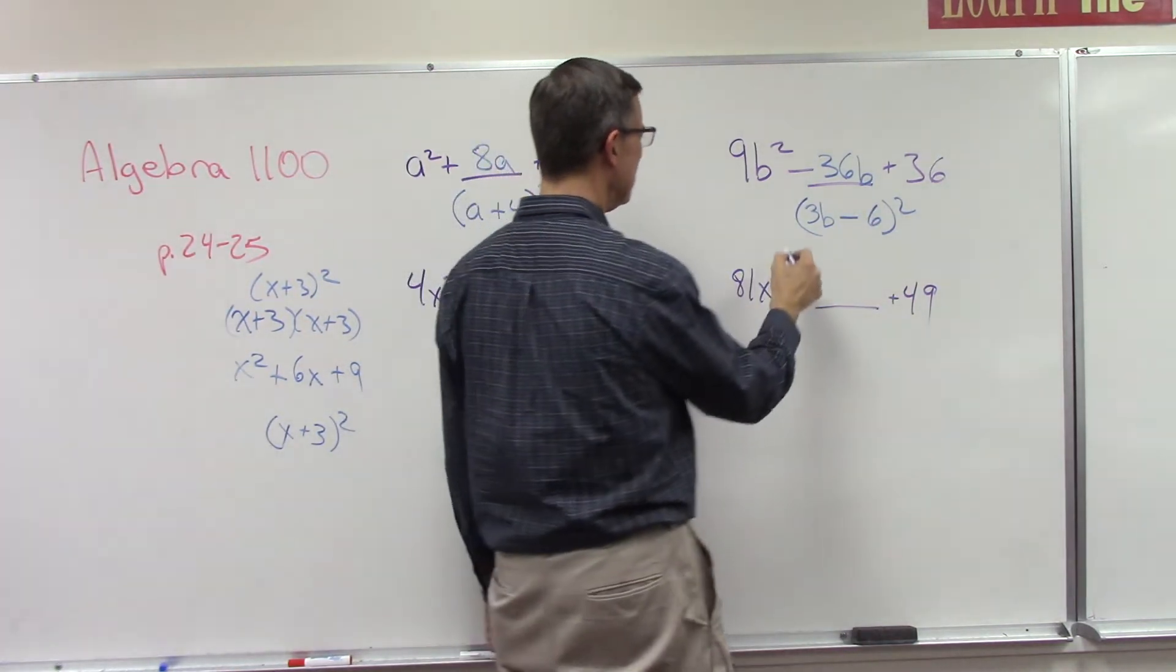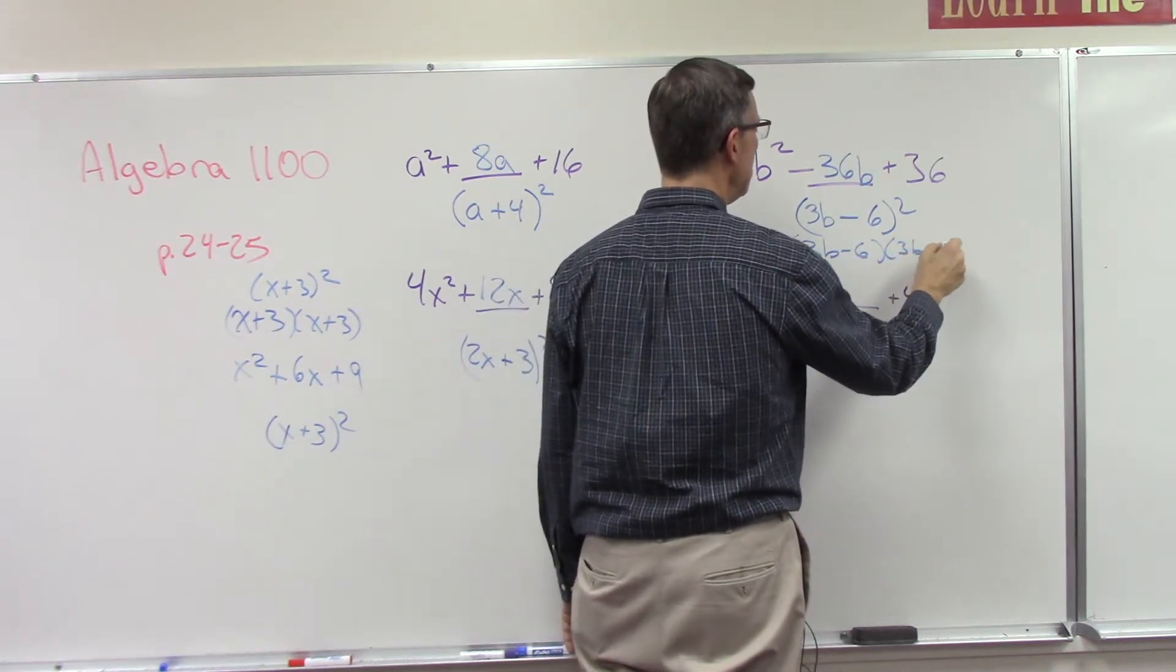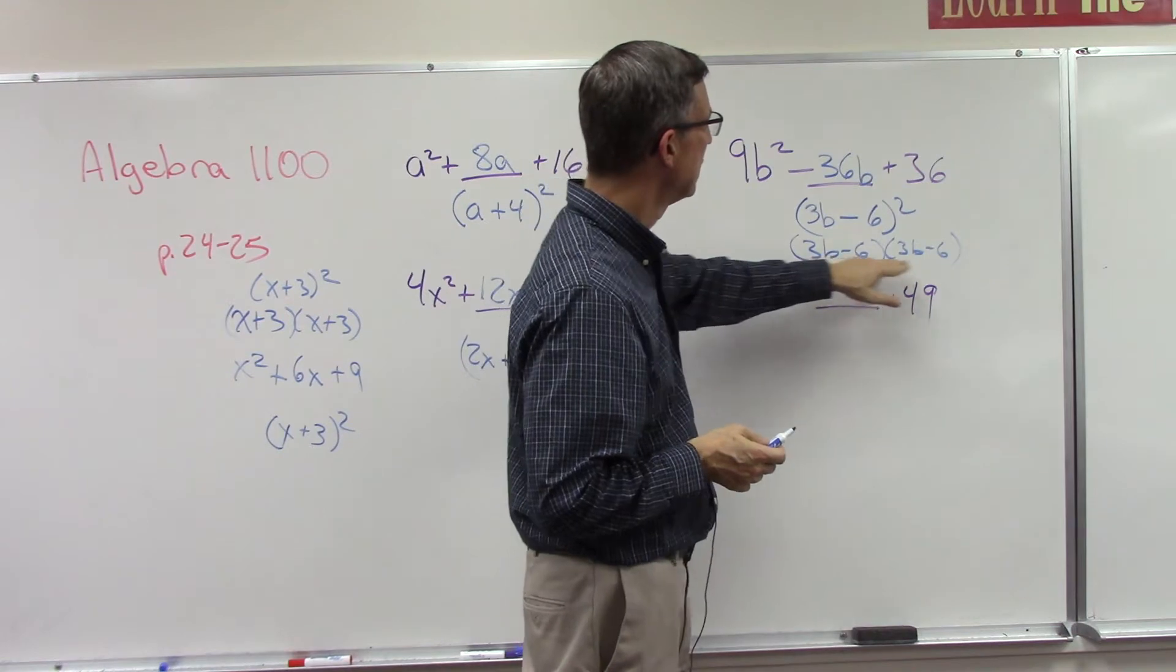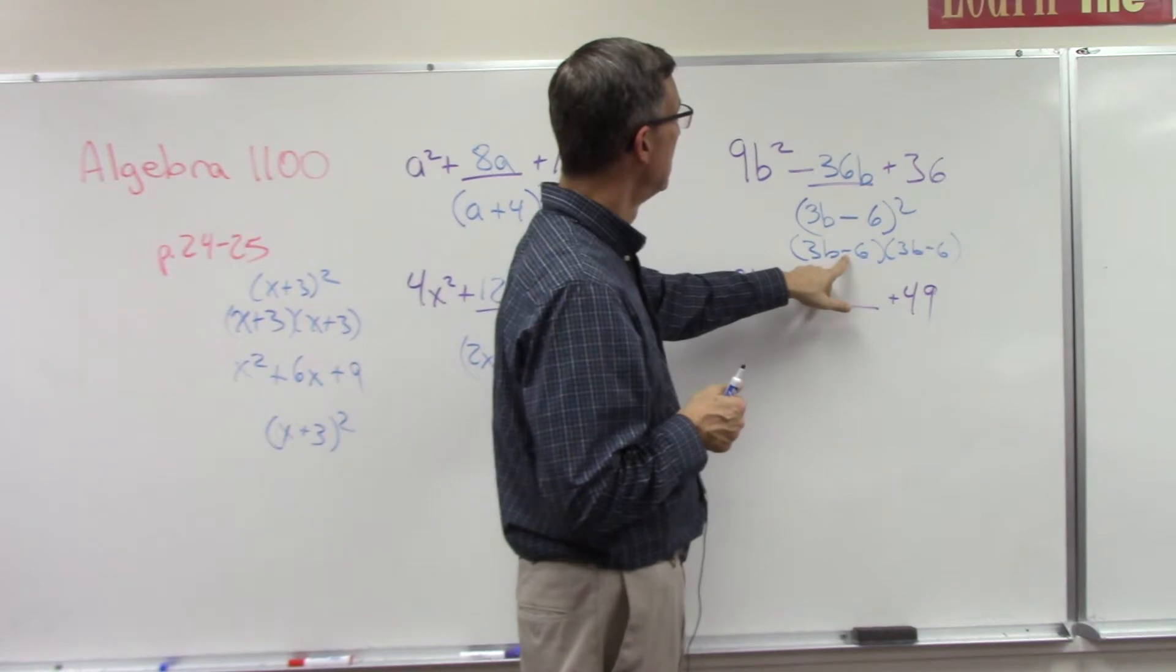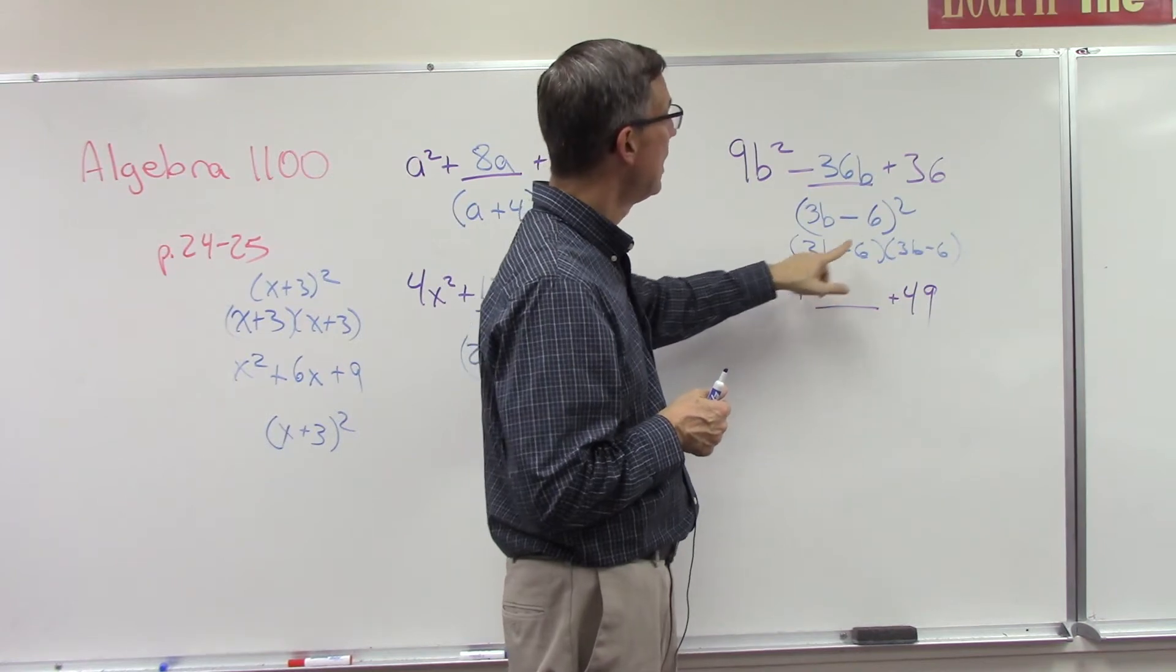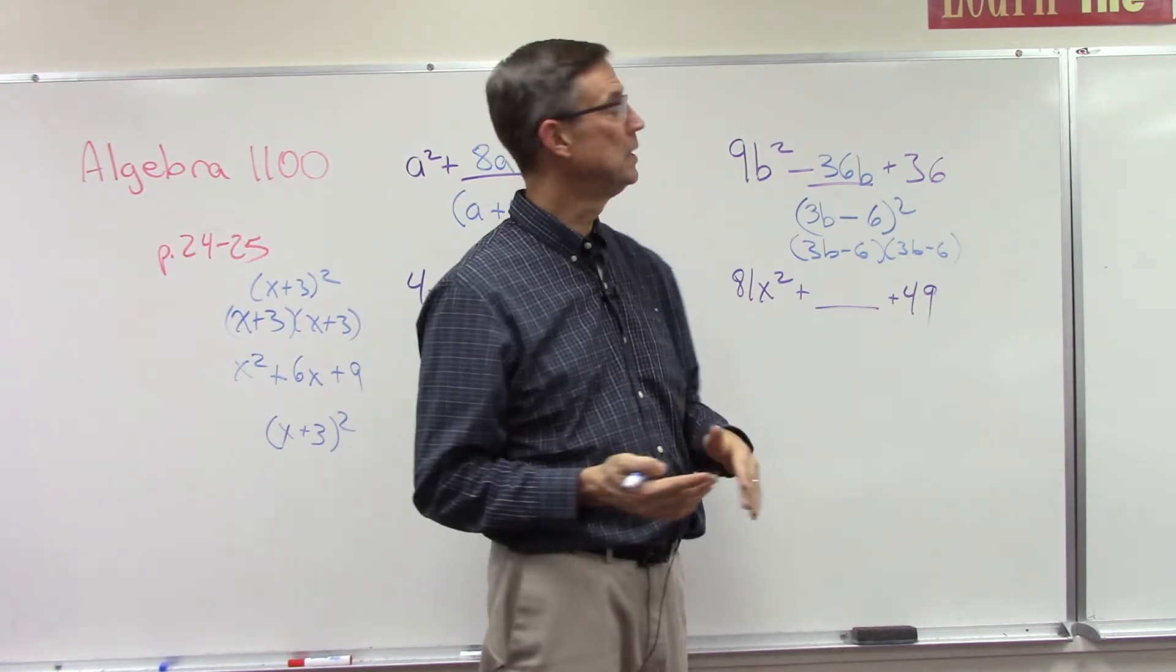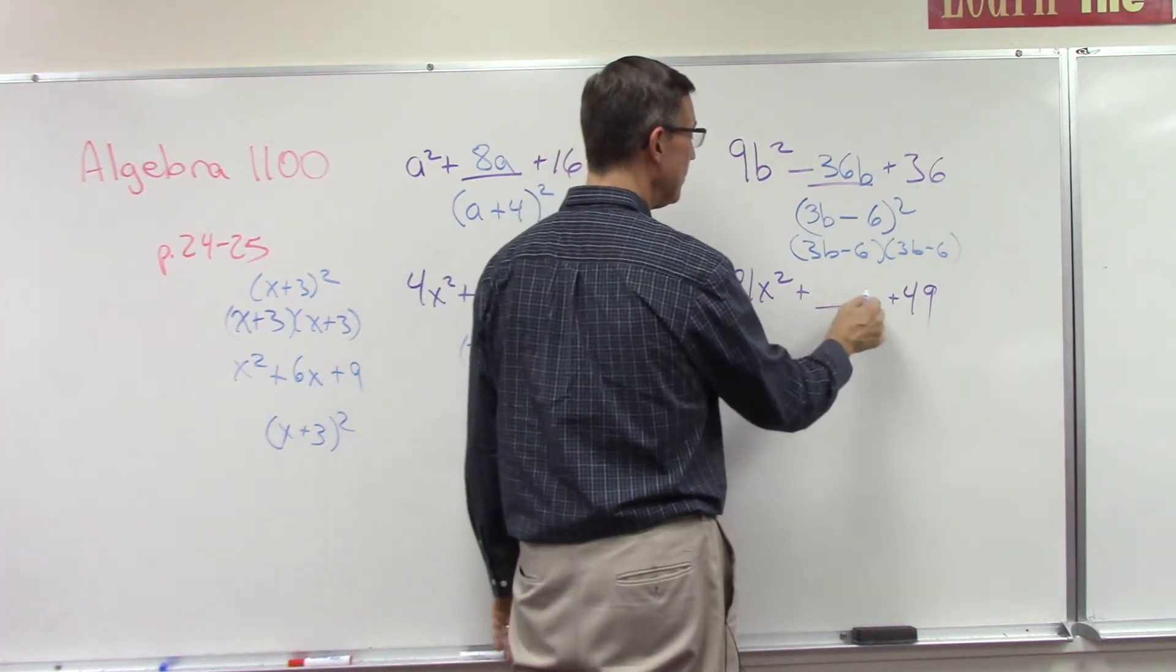Now let's just check that one because that one looks a little odd. So let's do 3b minus 6 times 3b minus 6. If we do the FOIL method, what do we get? 3b times 3b, that's 9b squared, we're good there. At the end we get negative 6 times negative 6, positive 36, we're good there. Let's check the middle term. Negative 6 times 3b would be negative 18b, and then in the middle we have negative 18b. Negative 18b plus negative 18b is indeed negative 36b.